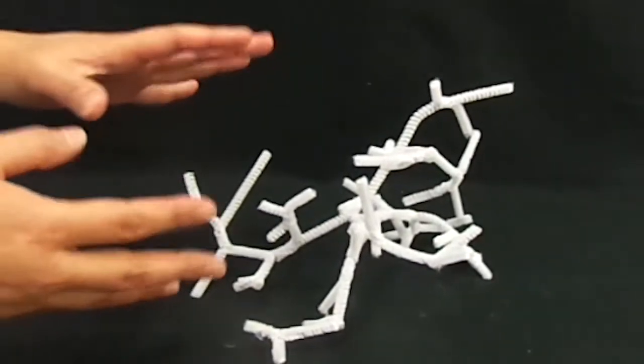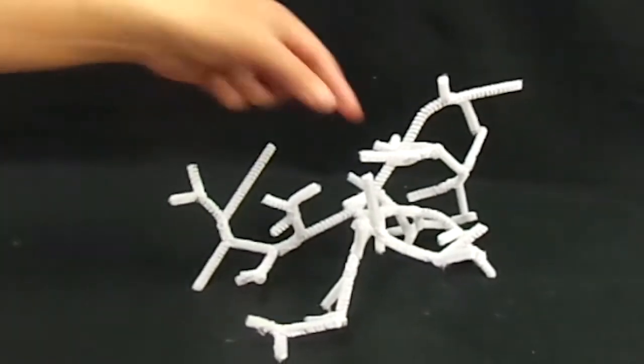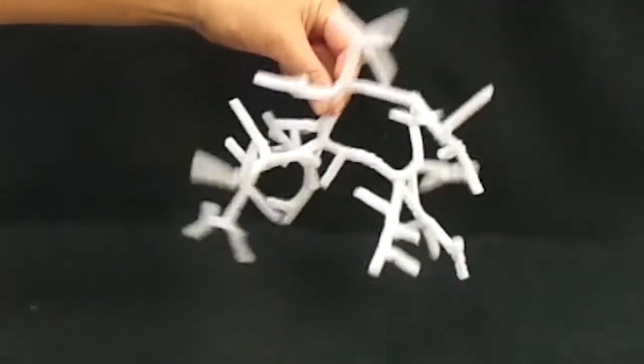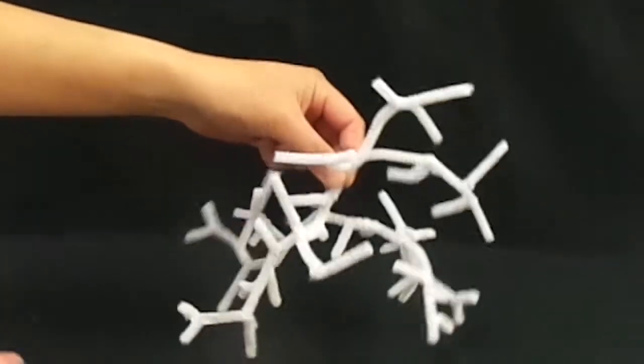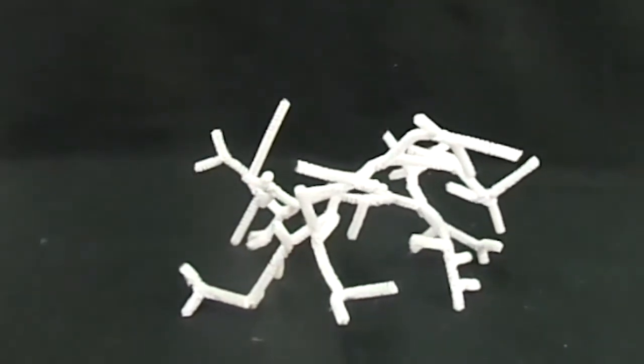All right, so this is one filament of our branched nocardia form. As you can see, it is one full filament with many, many branches that go off in three-dimensional directions.